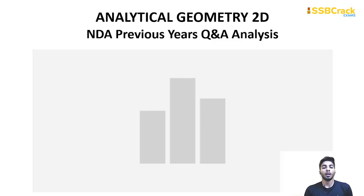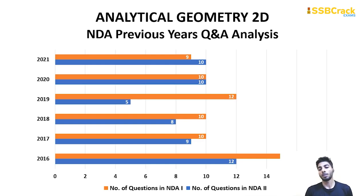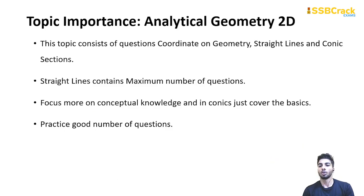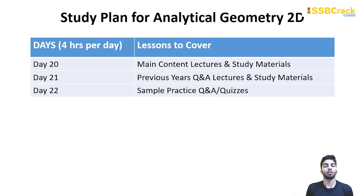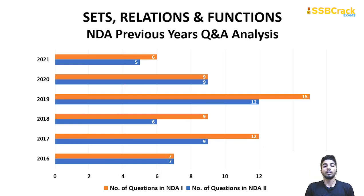Analytical geometry 2D has a maximum of 16 questions and a minimum of 5. It covers straight lines, coordinate geometry, circle, ellipse, parabola, and hyperbola. Focus on the basics: properties of each conic, eccentricity formulas for hyperbola and ellipse, distance formula, and the equation of a straight line. Don't go too deep — just remember the fundamental properties and practice some questions. Cover this from day 20 to day 22, giving 4 hours per day.